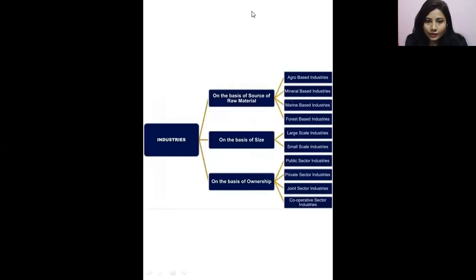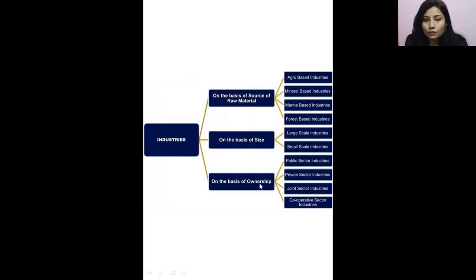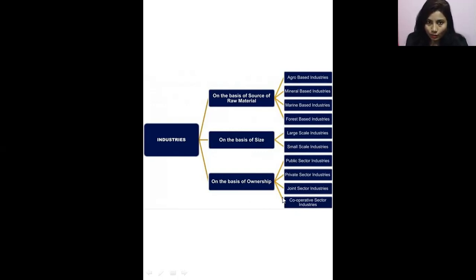The classification of an industry is important to know. Industries are classified on the basis of sources of raw materials, on the basis of size, and on the basis of ownership. On the basis of raw materials: agro-based, mineral-based, marine-based, and forest-based industries. On the basis of size: large-scale and small-scale industries. On the basis of ownership: public sector, private sector, joint sector, and cooperative sector.